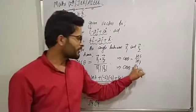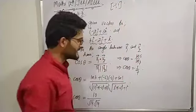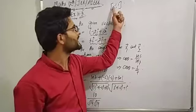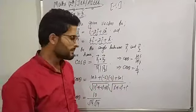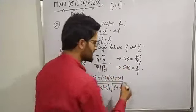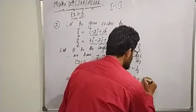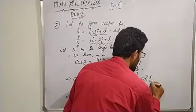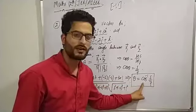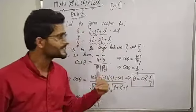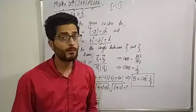Since 5/7 lies in the closed interval [−1, 1], which is the domain of cos inverse, operating cos⁻¹ on both sides gives θ = cos⁻¹(5/7). So the angle between the two given vectors v1 and v2 is cos⁻¹(5/7). That is all about question number 2.